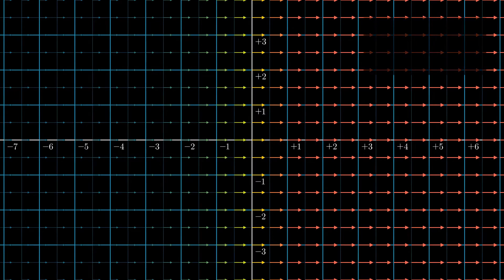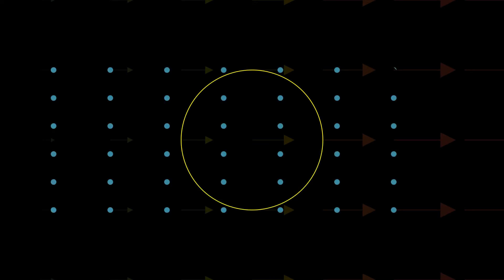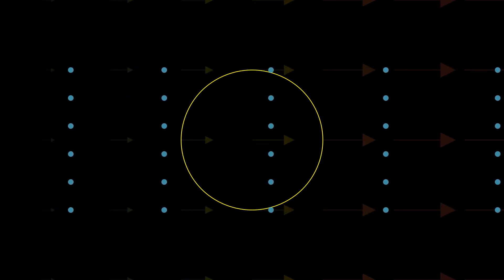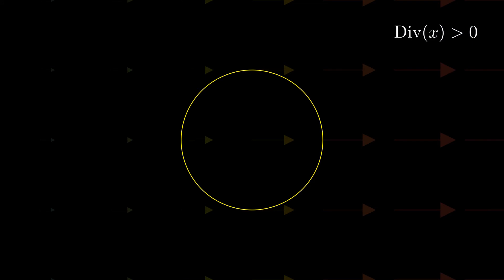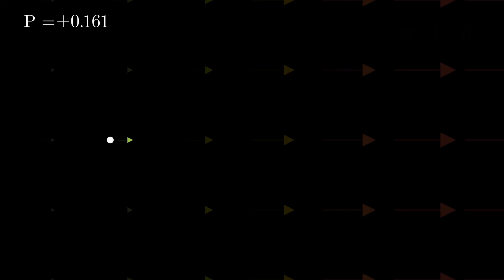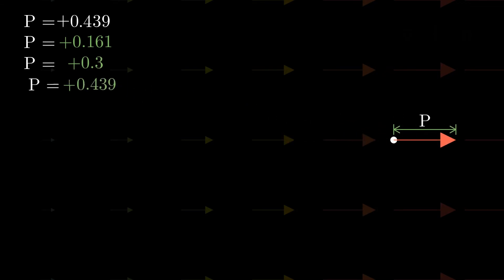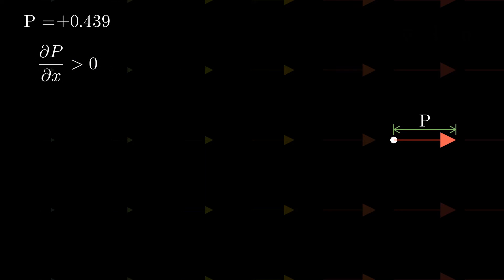Consider a field that contains only an x component — in other words, particles cannot flow up or down. Concentrating on the yellow circle, as the density decreases, we conclude that we have a positive divergence. One interesting thing to note here is that when we observe the values of the x component of the field, p, as we take tiny steps along the x direction, they tend to increase, implying a positive partial derivative of p with respect to x.